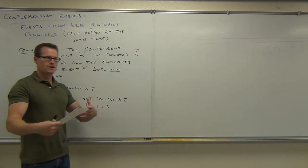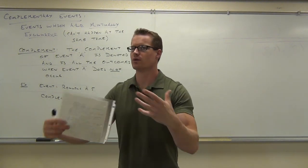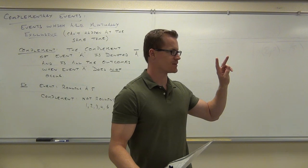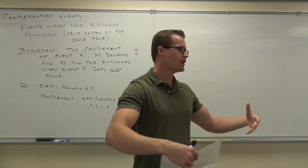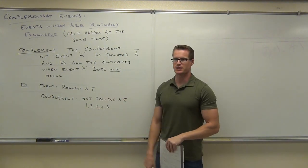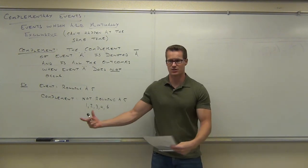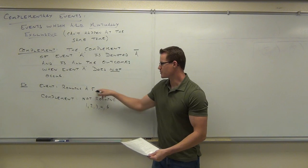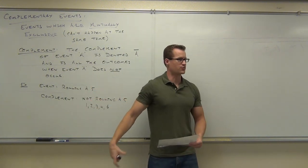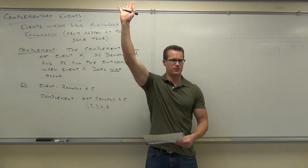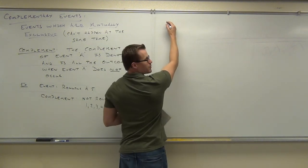Complementary events add together to create the whole sample space. If you're talking about two complementary events, it's either one or the other — they're mutually exclusive, but together they make up everything. You can't get a 0 or a 7; rolling a 5 and rolling not-5 covers all possibilities. That's the complement of rolling a 5. Now let's talk about the probability of these things.